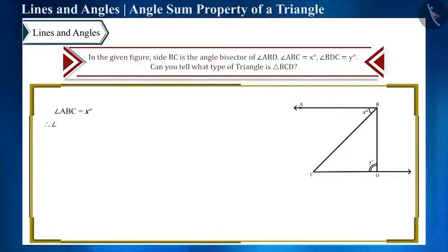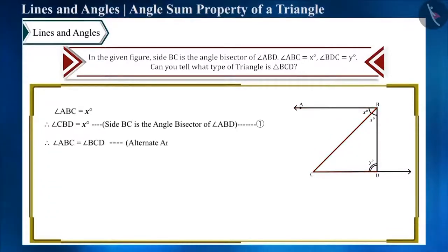Friends, as angle ABC is x degrees, so angle CBD will also be x degrees because side BC is the angle bisector of angle ABD. Angle ABC is equal to angle BCD as they are alternate angles, thus angle BCD is also an angle of x degrees.